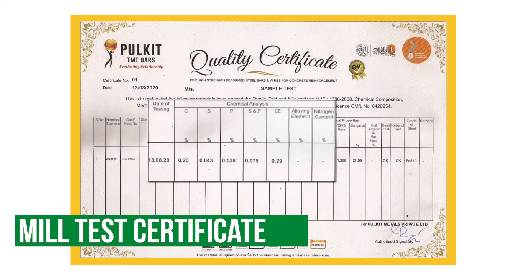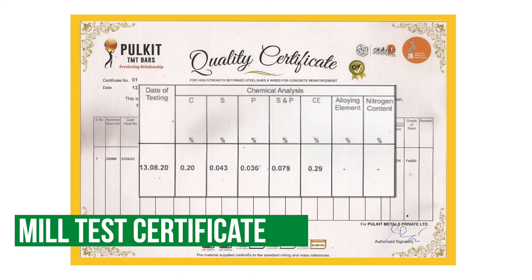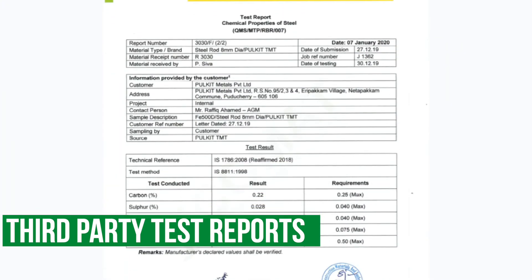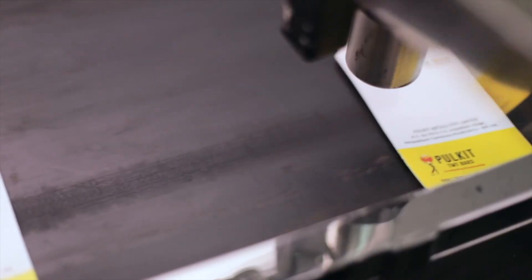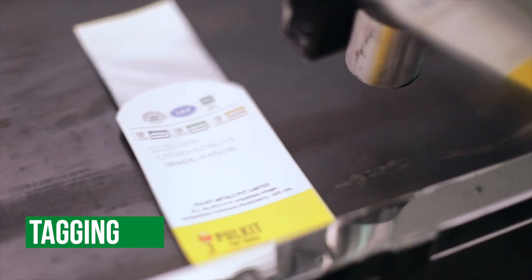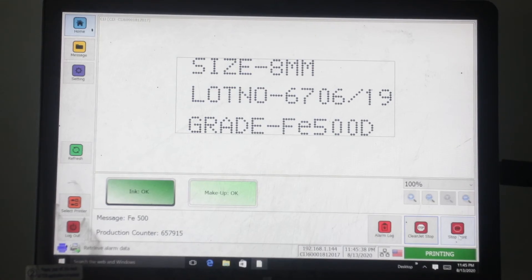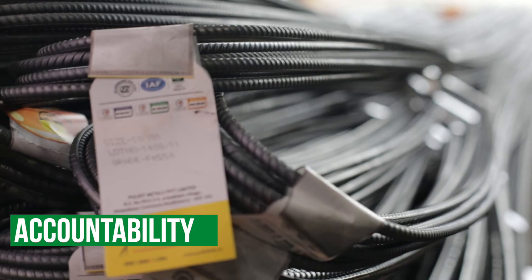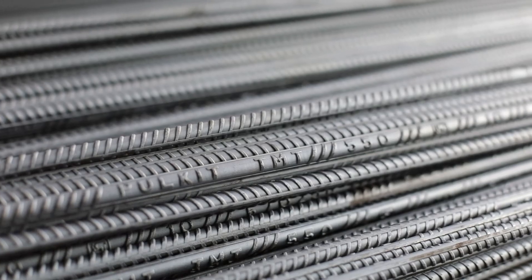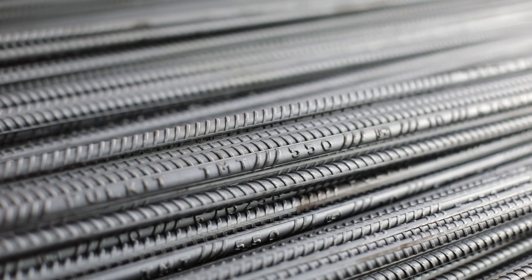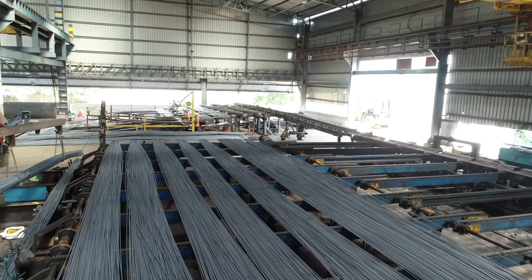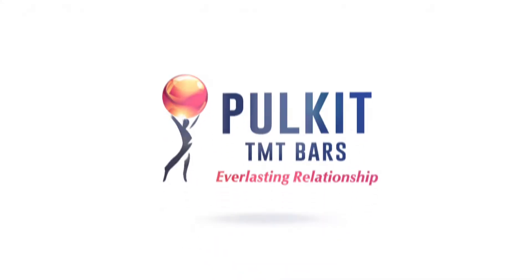These tests are done batch-wise by the manufacturer, and the mill test certificate of each batch will be available with the seller. A quality-conscious and reputed manufacturer will tag every bundle with a lot or batch number and other details that help in backtracking steel rods all the way back to their ore, thereby providing accountability with relation to chemical parameters.